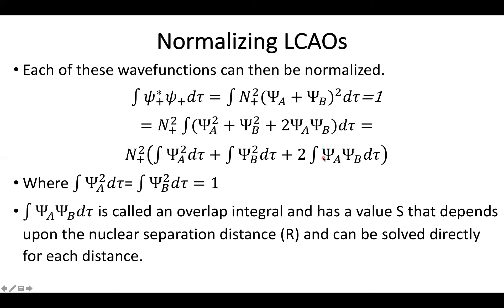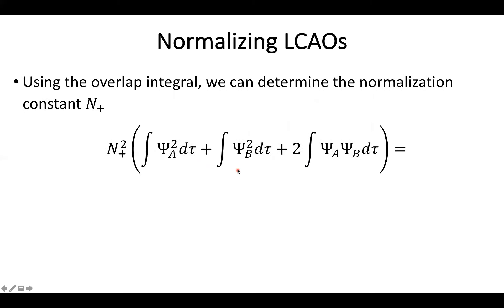So I now have an expression for each of my three terms. So using my overlap integral and the definition of my two normalized wave functions, I can go ahead and solve for my normalization constant. So I have my first term drops to 1, 1, and then twice the S.